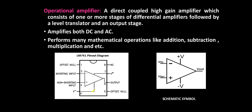At the fourth terminal, the V-minus source is applied. At the fifth terminal, we have offset null. At the sixth terminal, we take the output from the operational amplifier. At the seventh terminal, we supply the other source, that is plus V. And at the last terminal — the eighth pin — it is no connection. This is about the pin diagram of the operational amplifier.